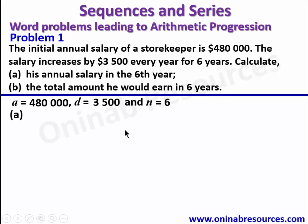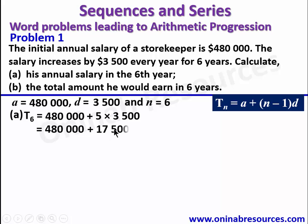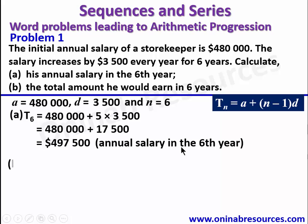Remembering our formula, we have TN = A + (N − 1)D. So here we'll be looking for T6 = 480,000 + (6 − 1) × 3,500. Since N is 6, so 6 minus 1 is 5, then multiply by 3,500. Simplifying, we carry out the multiplication first: 480,000 + 17,500, since 5 times 3,500 is 17,500. Summing up, we have $497,500, which represents the annual salary in the 6th year.